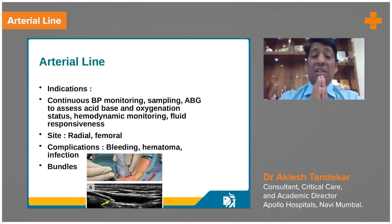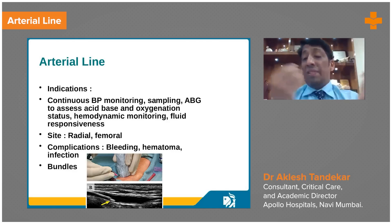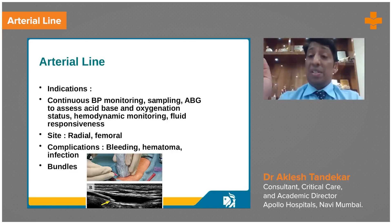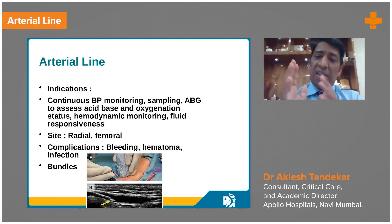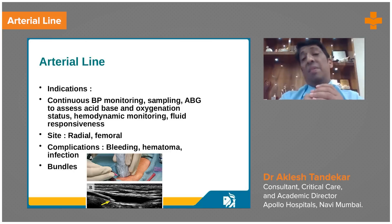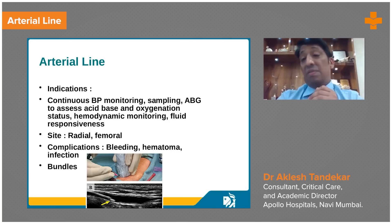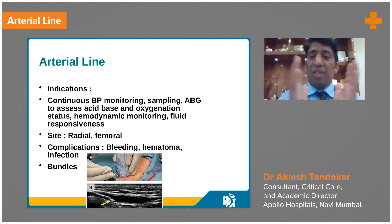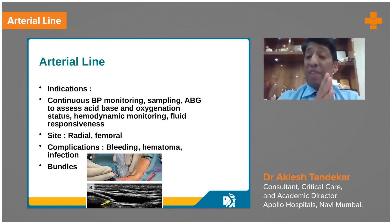Arterial line is very important. Sites are radial and femoral. Any patient on vasopressors like noradrenaline needs arterial line with continuous monitoring, because cuff pressure measurement is not reliable enough — it can give falsely lower or falsely high values.